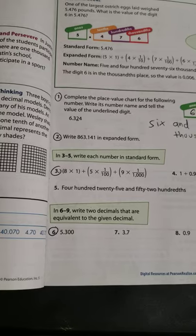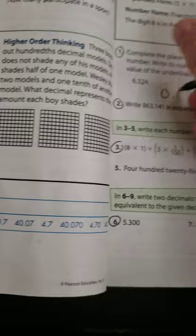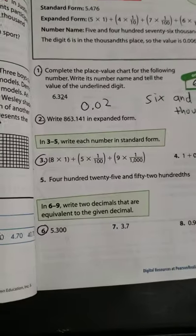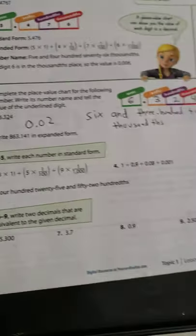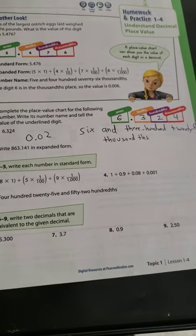And then finally, it says, what is the value of the underlined digit? Well, that is just zero point zero two, which is two hundredths. So that's the third part of it. So that was number one.